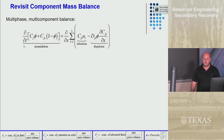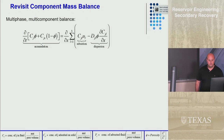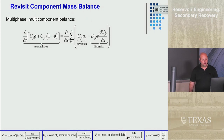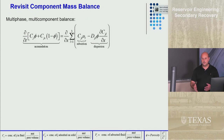This is the accumulation of mass that occurs. On the right is the transport mechanism — how component J moves through our porous medium. It can move two ways: through advection, where the fluid carries it, and through dispersion or mixing. The dispersion coefficient is a function of velocity — higher velocity means higher dispersion coefficient. This term is Fick's law, summed over potentially three phases: aqueous, oleic, and gaseous.